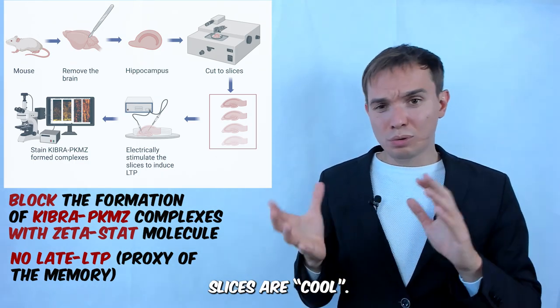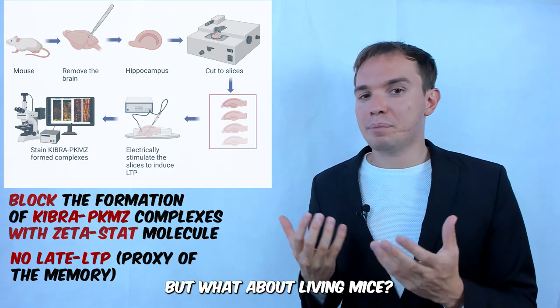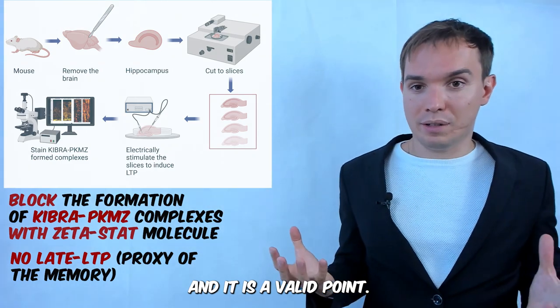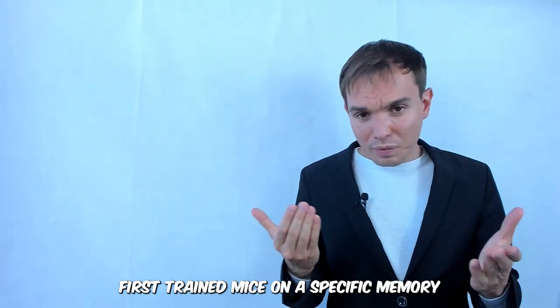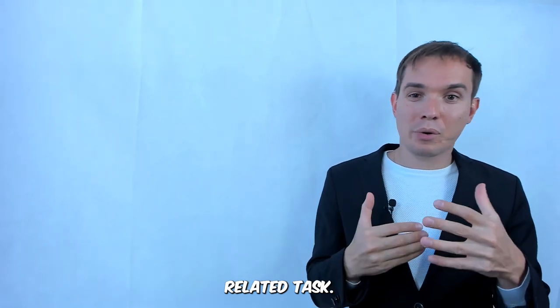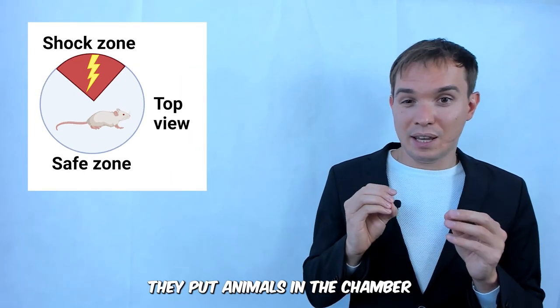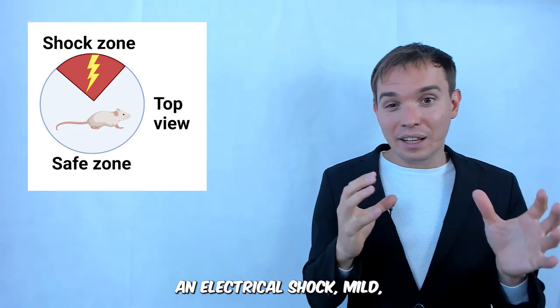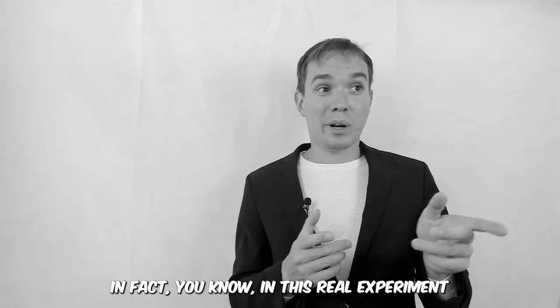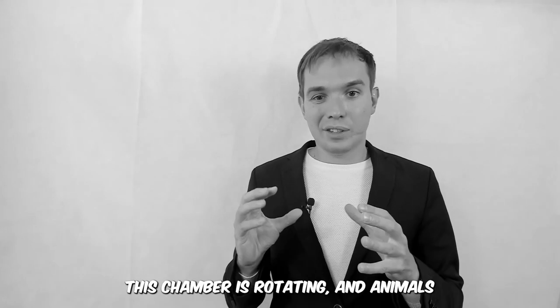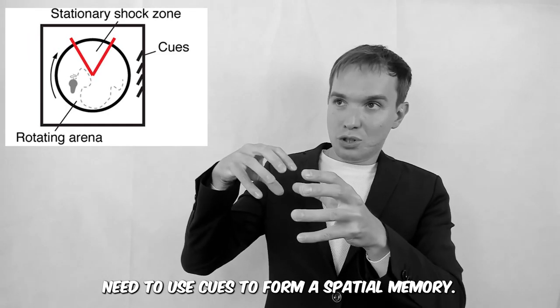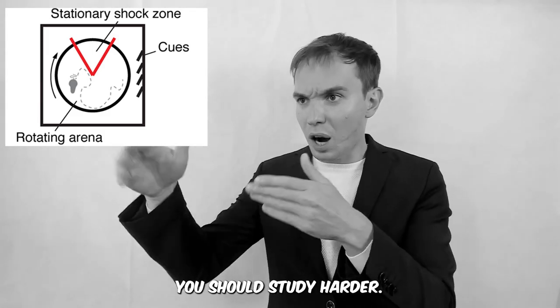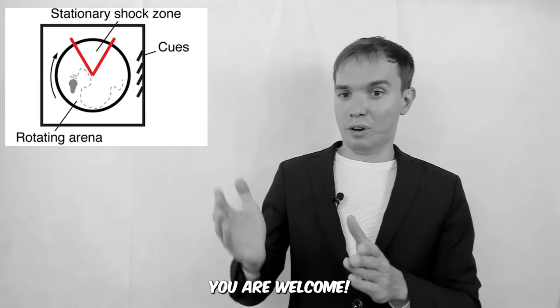But then, okay, slices are cool, interesting approach, but what about living mice? At the end, one can always argue that this whole process may differ in the living organism—it is a valid point. Therefore, at the next stage, researchers first trained mice on a specific memory-related task. In simple words, they put animals in a chamber where, when entered in a certain zone, the animal received an electrical shock—mild but still unpleasant. In fact, in this real experiment, this chamber is rotating and animals need to use cues to form a spatial memory. And if you're wrong, it's not just 'oh you should study harder, think about it,' no, it's like 0.2, 0.3 milliamp shocks. Welcome! Not that easy if you think about it.